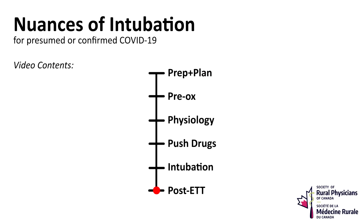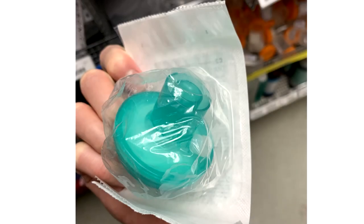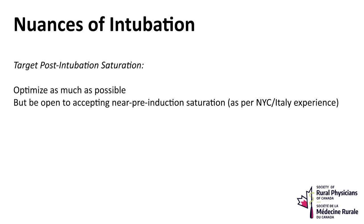Now a few key points about the post-intubation care of these patients. Once the endotracheal tube is in place, do not ventilate the patient until the endotracheal cuff is inflated and a viral filter is placed. Only at this point are you protected from the patient's exhalations. Observations from New York and Italy found that saturations often dropped after the patient was intubated and stayed low for a few hours post-intubation, even after appropriate physiologic optimization and an uneventful intubation. Your target O2 sat for these patients should be their pre-induction O2 saturation or higher.